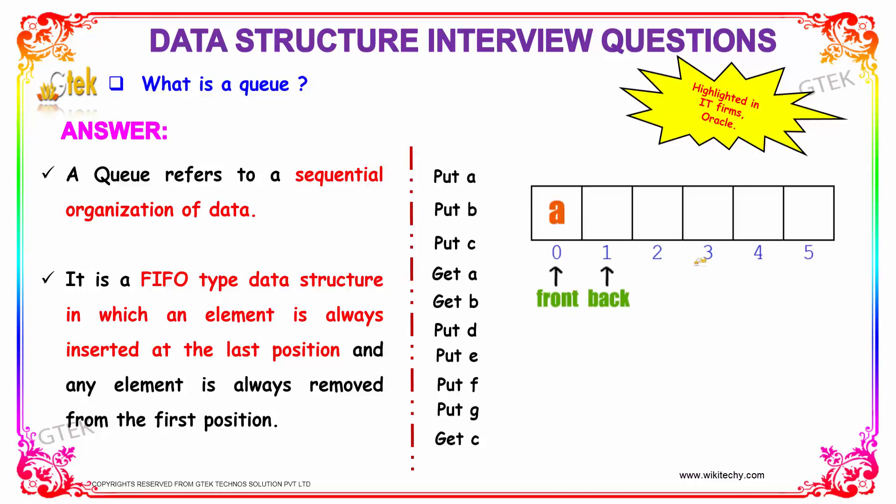Any element is always removed from the first position. Here if you see, put A, put B, and put C, followed by get A and get B. Then we are putting D, E, F, and G in the front as the queue grows.